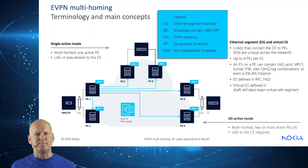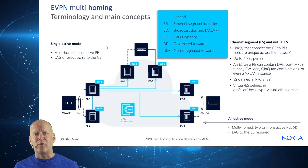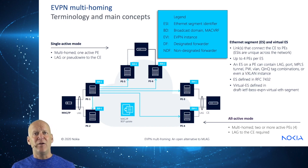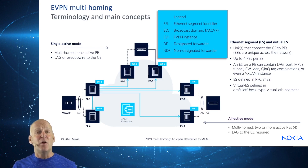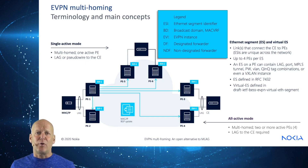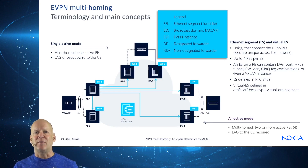Terminology and main concepts. There are always new acronyms to learn in every technology. Most people know the terminology of the PE and the CE — the DMARC devices of the provider edge and customer edge of the network, respectively. We have an ESI, or Ethernet segment identifier. The ESI is the attachment circuit into the EVPN from the PE to the CE. We have a broadcast domain, which is a BD or MAC-VRF. We have an EVI (EVPN instance), DF or designated forwarder, and NDF, non-designated forwarder.